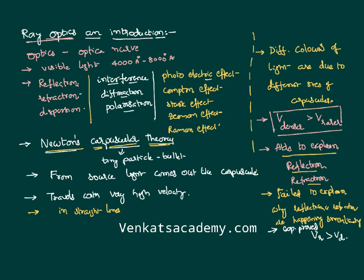Because as per Newton, light is a particle — either it has to come back into the same medium or go to the other medium. How can this corpuscle split into two parts, with one part going into one medium and another part going to the other medium? There is no proper explanation. Moreover, during this period, people also identified the properties of interference, diffraction, and polarization, and Newton's corpuscular theory failed to explain all these properties.